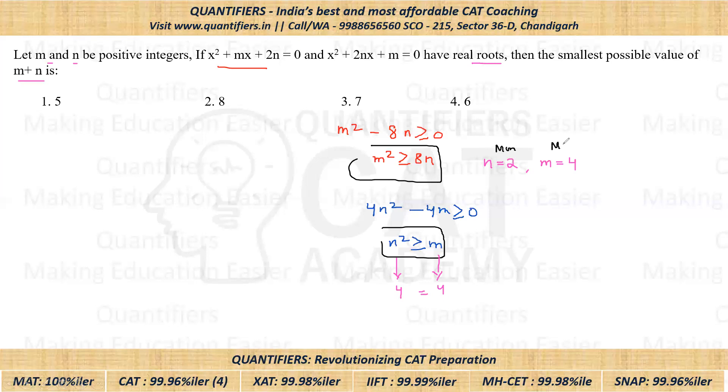Okay, these are the minimum values of N and M and we have to find the smallest possible sum. So answer would be 2 plus 4, 6 is the correct answer. Very easy question guys. All of you could have done it. Option fourth is the correct answer. Thank you everyone, thank you all.